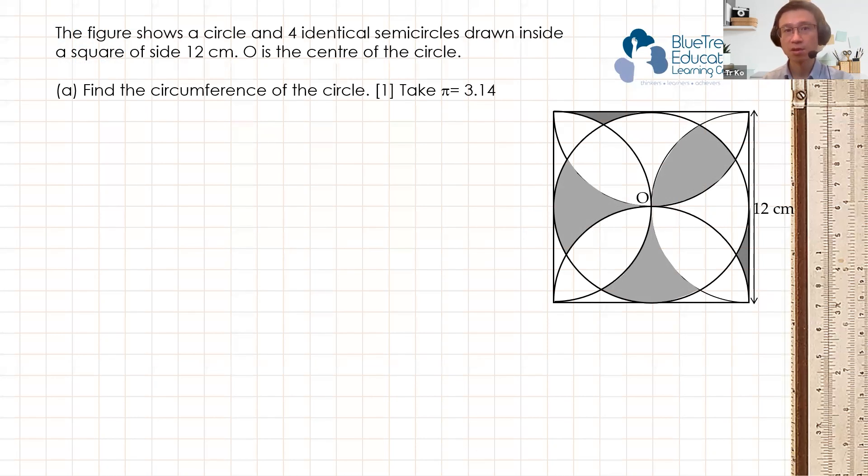Find the circumference of the circle. Take pi as 3.14. So looking for the circumference is pretty straightforward. We know that the diameter is 12 centimeters. So the circumference is just pi D, pi times the diameter, 3.14 times 12 cm is just 37.68 centimeters. That's no problem at all.